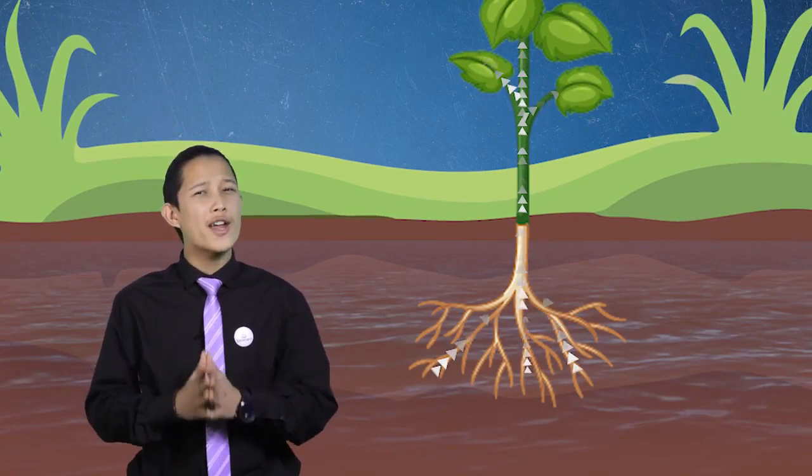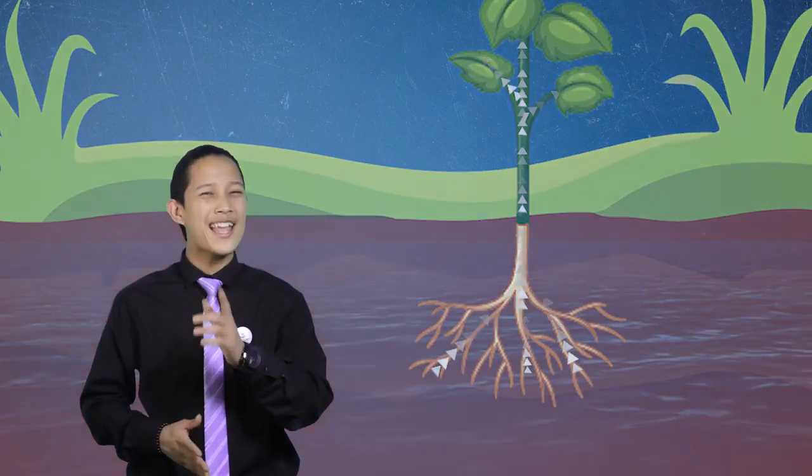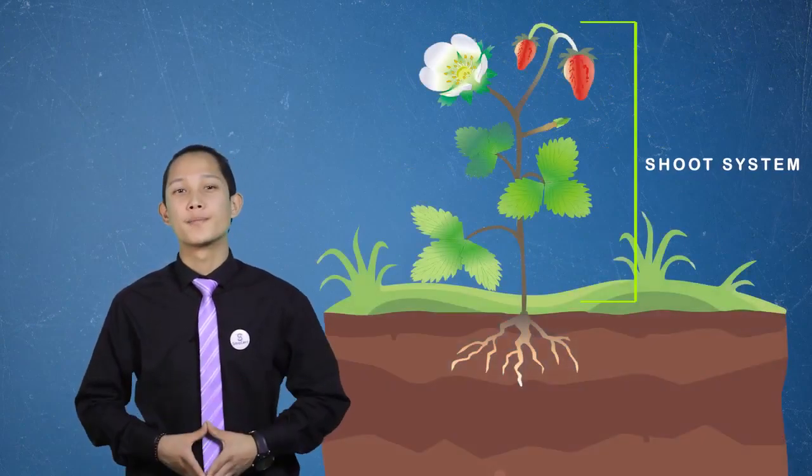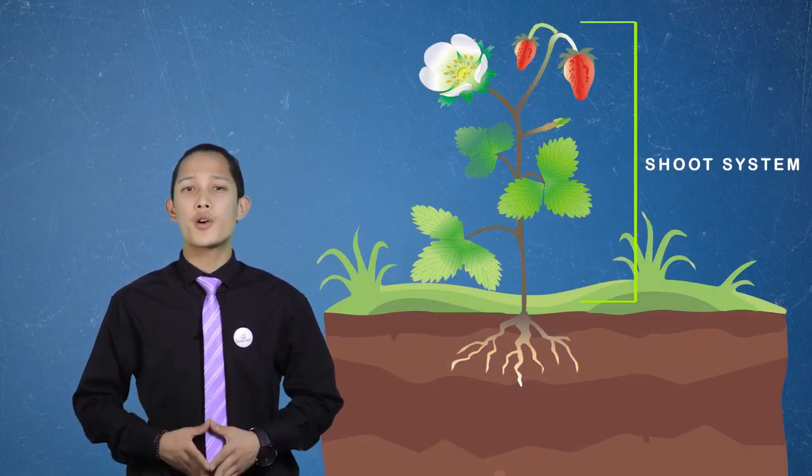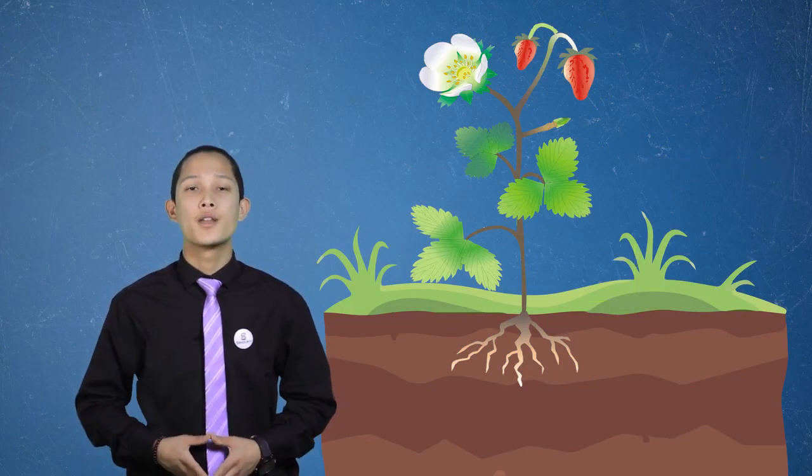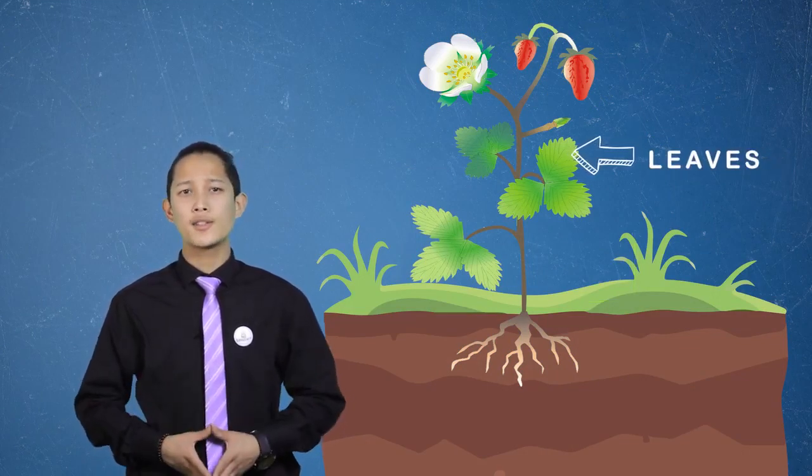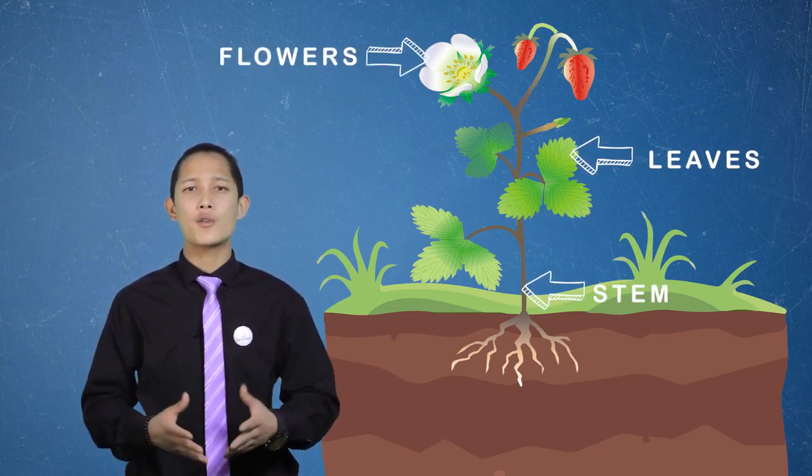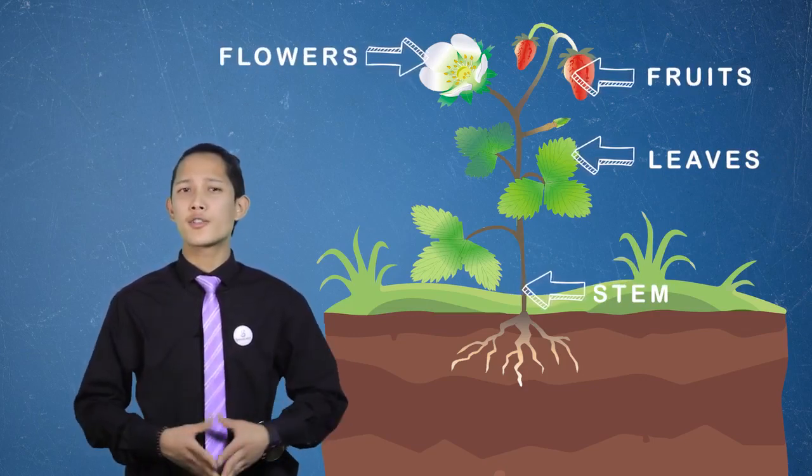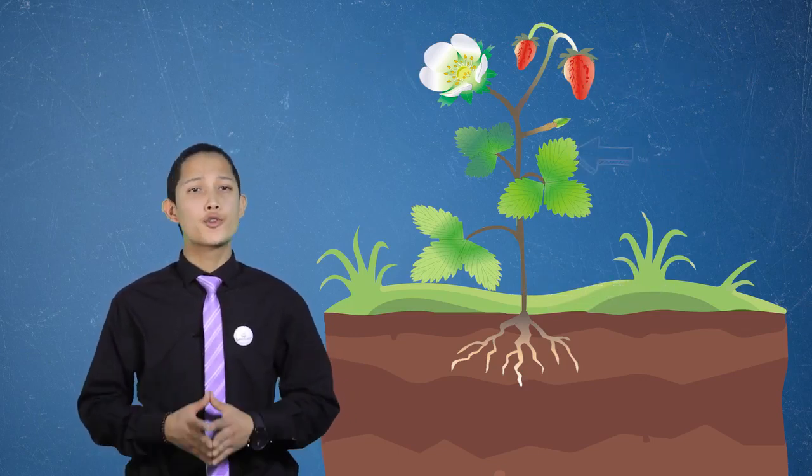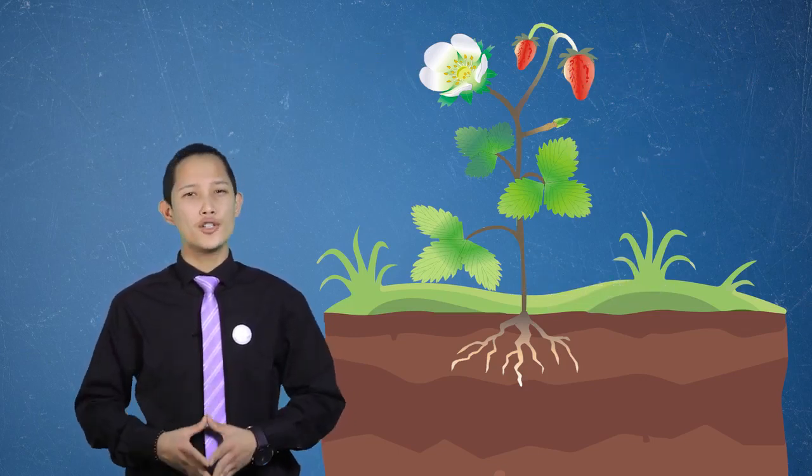Number two: Shoot System. The shoot system above the ground is the most obvious part of the plant. It consists of the leaves, stem, flowers and fruits. So let's talk about leaves.